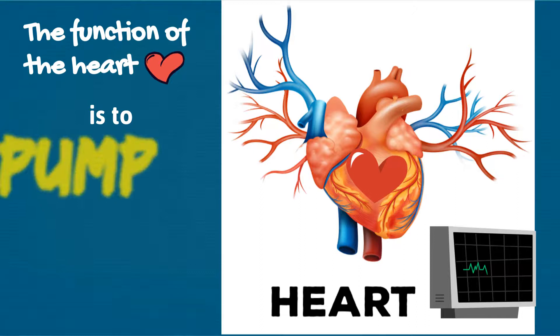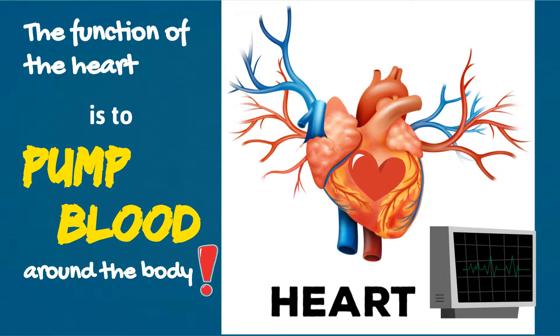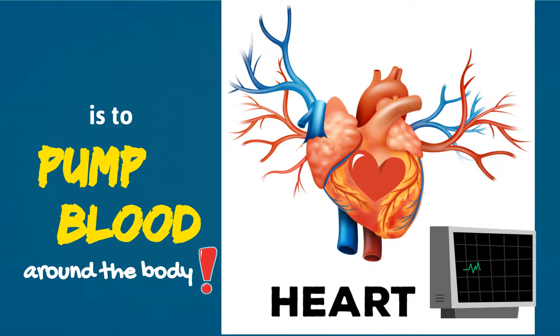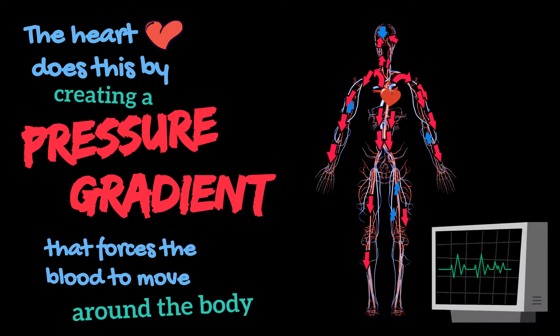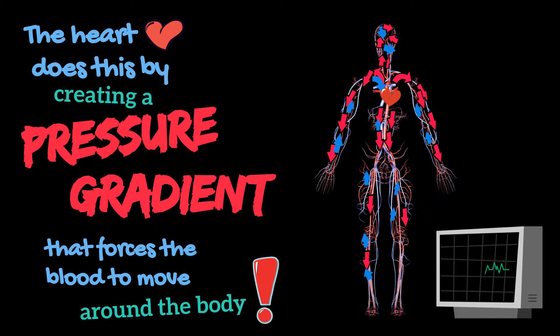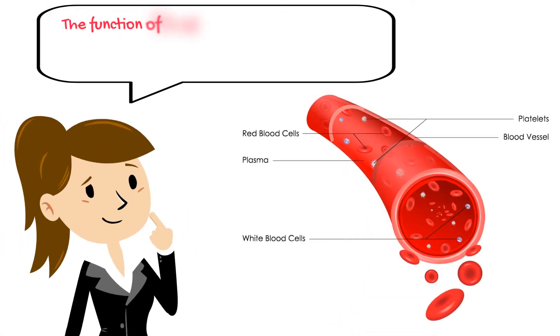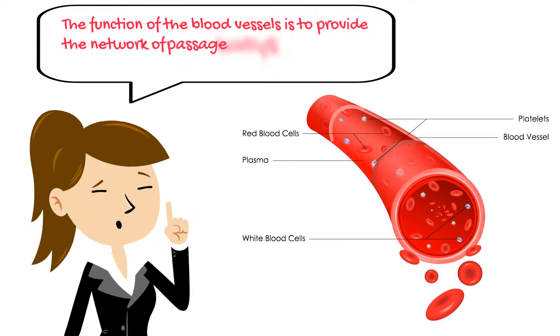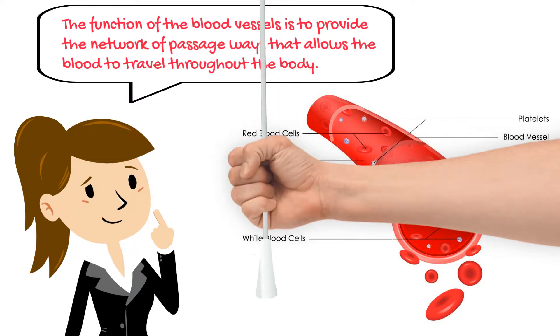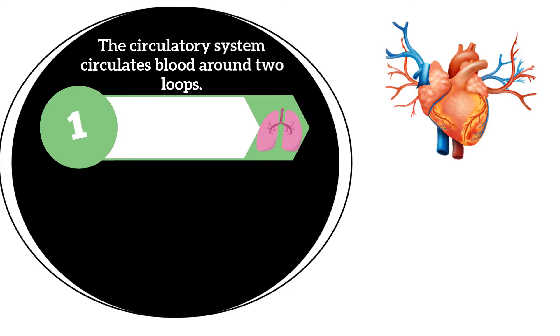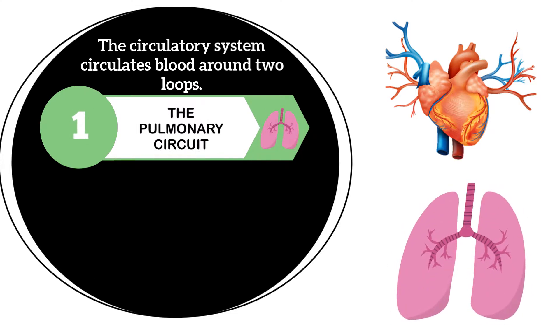The function of the heart is to pump blood around the body. The heart does this by creating a pressure gradient that forces the blood to move around the body. The function of the blood vessels is to provide the network of passageways that allows the blood to travel throughout the body.